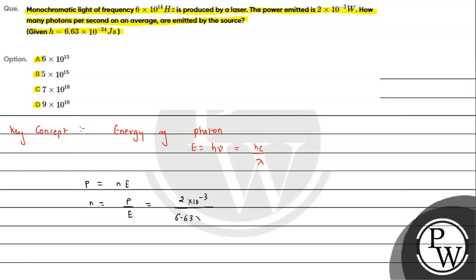n = P/E, so P is 2×10^-3. Energy we can see is h×ν. h value we have given is 6.63×10^-34. If we talk about ν, the frequency we have given is 6×10^14.